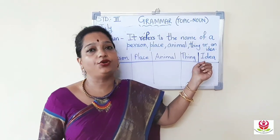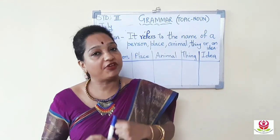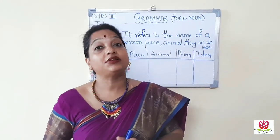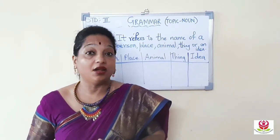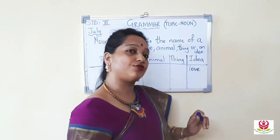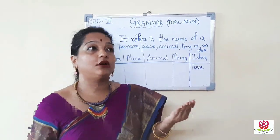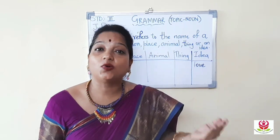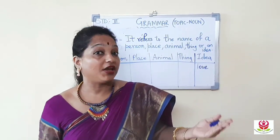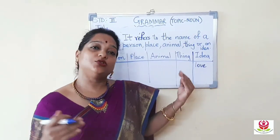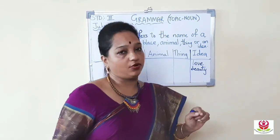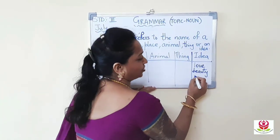Now, idea — as mentioned, you cannot see it but you can feel it. For example: 'The love of mother is pure.' Here, 'love' is a noun. When we say 'The princess looks beautiful,' beautiful is an adjective, but 'beauty' — which refers to the quality — is an idea, and ideas refer to nouns.